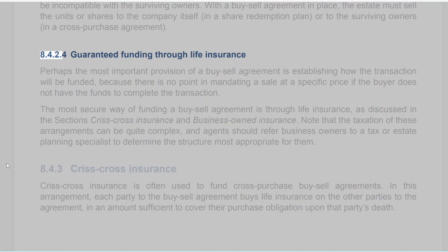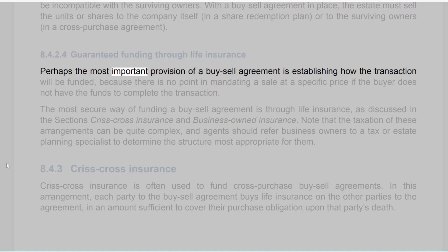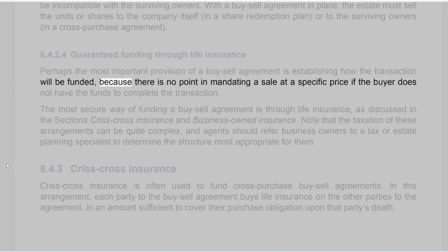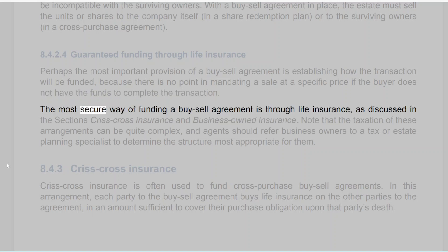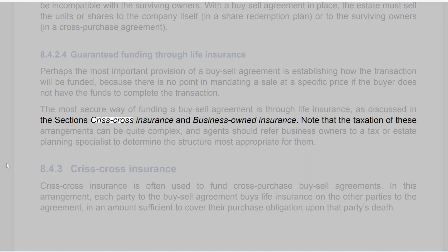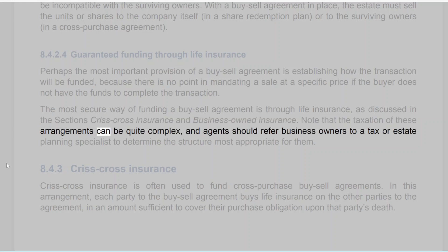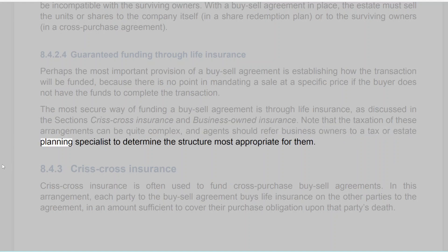8.4.2.4 Guaranteed Funding Through Life Insurance. Perhaps the most important provision of a buy-sell agreement is establishing how the transaction will be funded, because there is no point in mandating a sale at a specific price if the buyer does not have the funds to complete the transaction. The most secure way of funding a buy-sell agreement is through life insurance, as discussed in the sections on Criss-Cross Insurance and Business-Owned Insurance. Note that the taxation of these arrangements can be quite complex, and agents should refer business owners to a tax or estate planning specialist to determine the structure most appropriate for them.